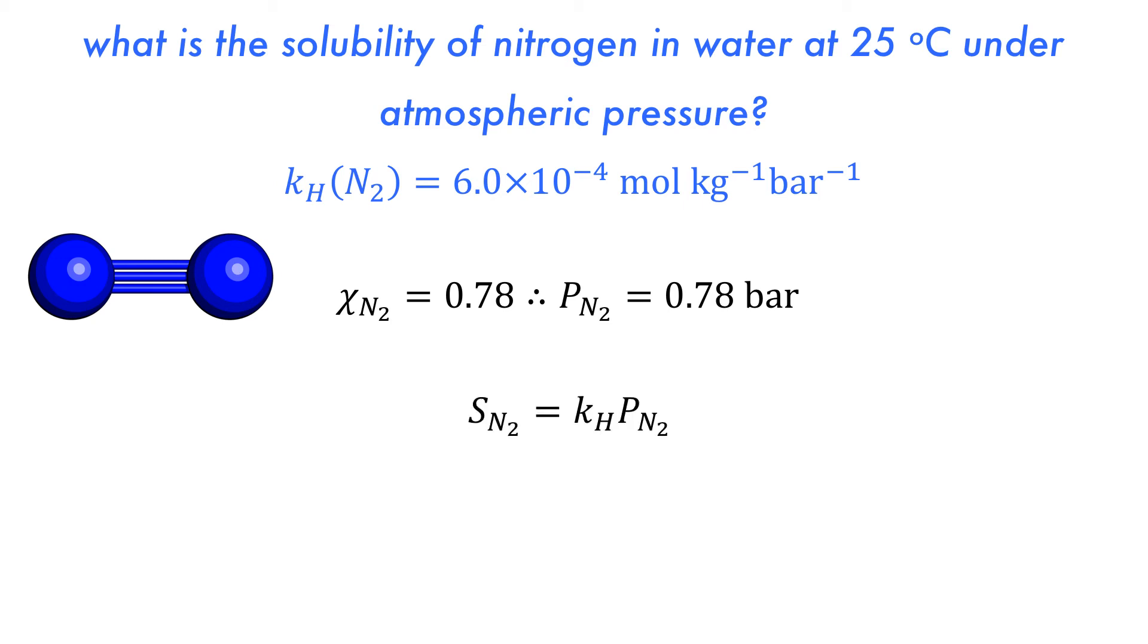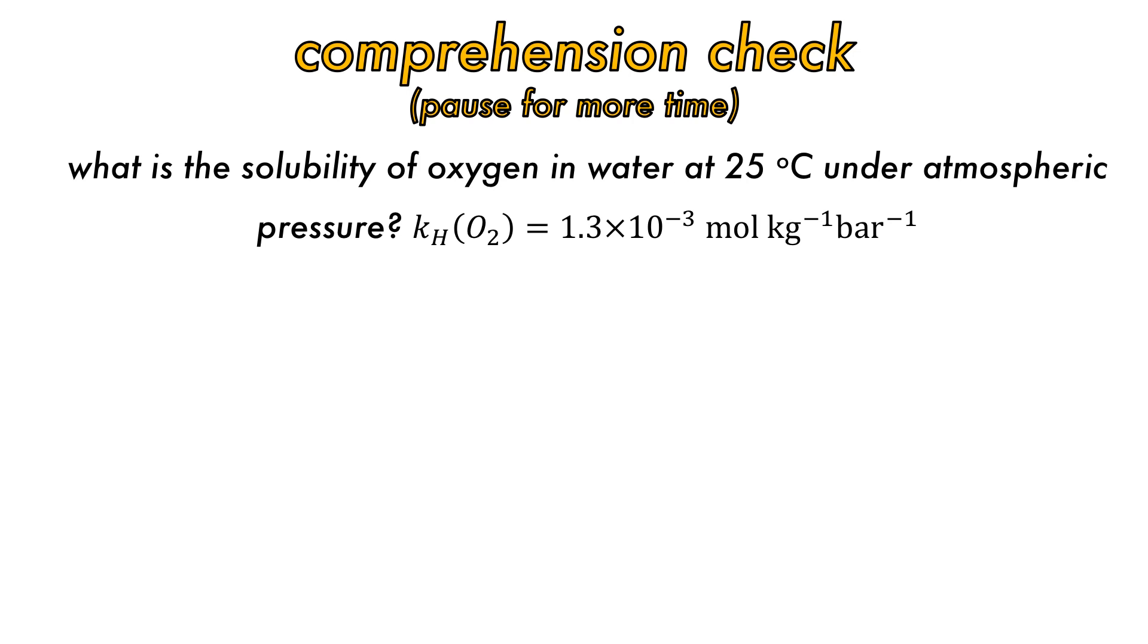The Henry's law solubility statement equation will be used. Filling in the values to the equation will give us a maximum solubility of nitrogen in water at atmospheric pressure and 25 degrees celsius of 4.7 times 10 to the minus 4 moles per kilogram of solvent. Let's check comprehension.